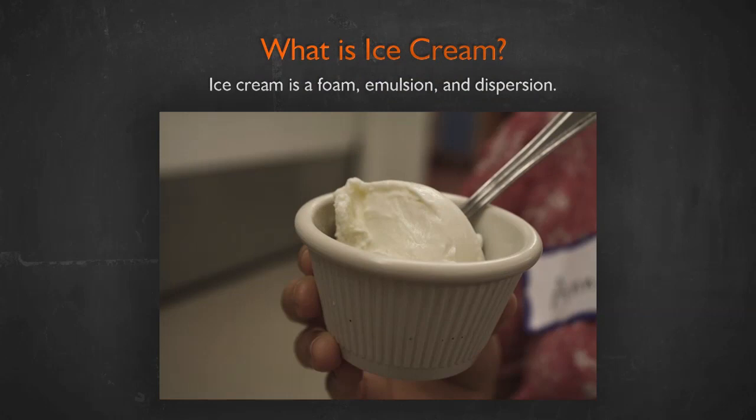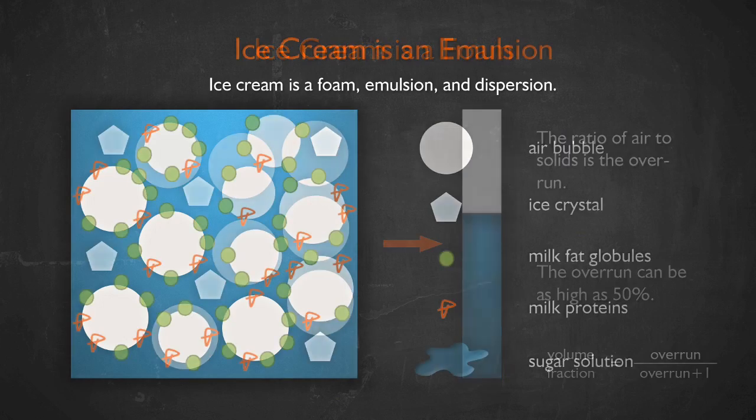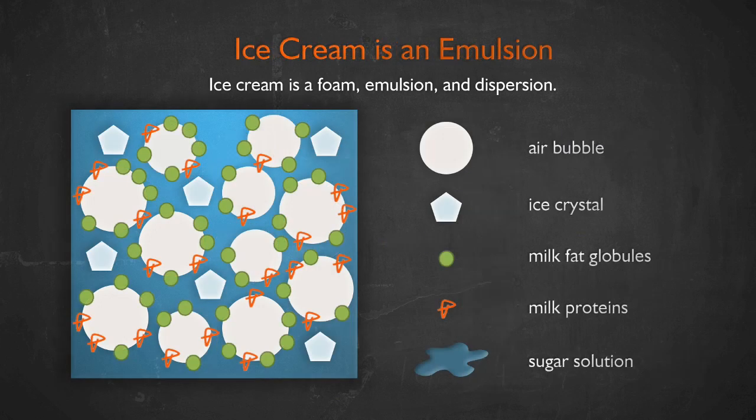An excellent example that encompasses all the types of dispersions we've talked about is ice cream. Ice cream is both a foam, an emulsion, and colloidal particles. Ice cream is a foam because there are lots of bubbles of air inside it. It's an emulsion because we make it out of milk, and milk itself is an emulsion of fat drops in the milk.